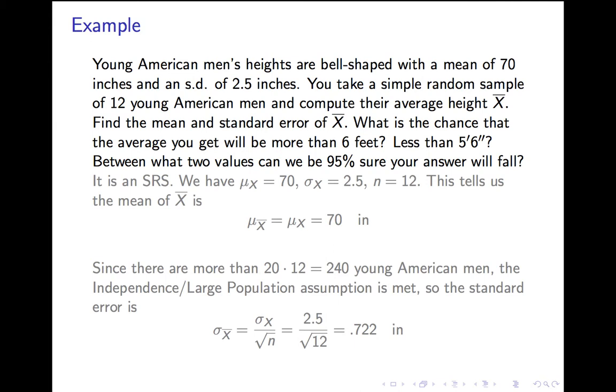I'm going to illustrate that. We're going to do a few examples together, and you'll start to see how using the 0-15-40 rule works, in fact, how using all the assumptions works. So, back to our first example. Young American men's heights, bell-shaped, mean of 70, standard deviation 2.5. You take a simple random sample of 12 young American men, and you compute their average height, x-bar. I have a bunch of questions to ask. What's the mean and standard deviation of x-bar? What's the chance that x-bar will be more than 6 feet, less than 5 foot 6 inches? What's the chance it'll be between two values? And what are the two values between which we can be 95% sure the answer will fall?